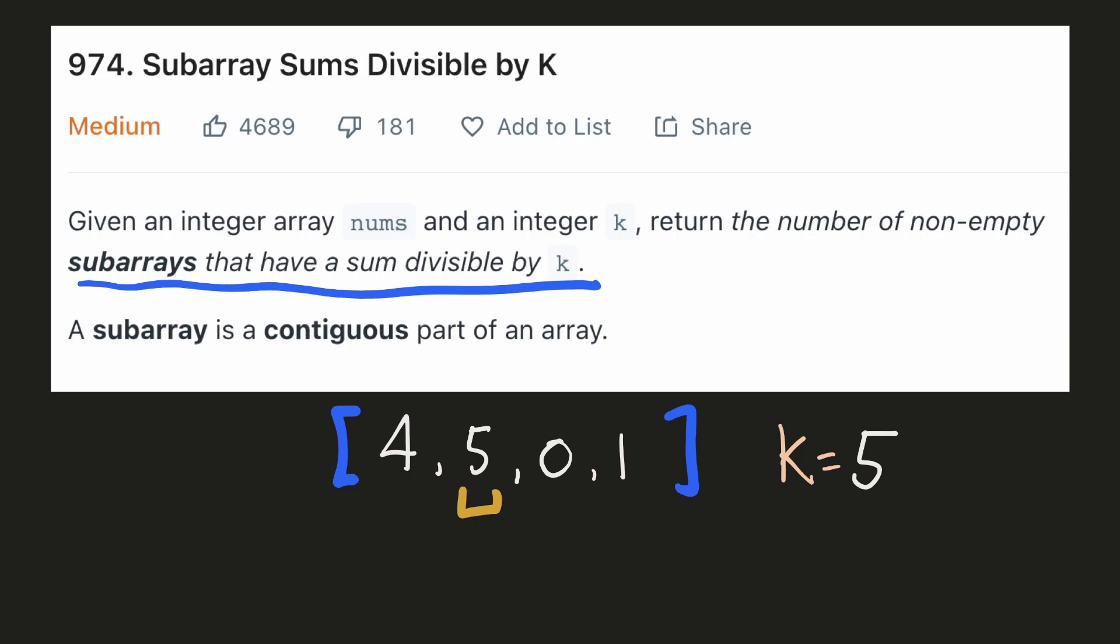For example, if we take a look at this subarray with only 5, its sum is divisible by 5. Similarly, if we consider a subarray with only 0, its sum is also divisible by 5. And when we consider both of these together, their sum is also divisible by 5. And finally, when we consider a subarray with all these numbers, the sum would be 10 and it is divisible by 5. So we can find 4 subarrays whose sum is divisible by 5.